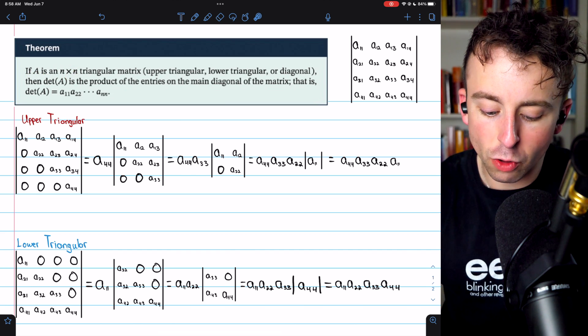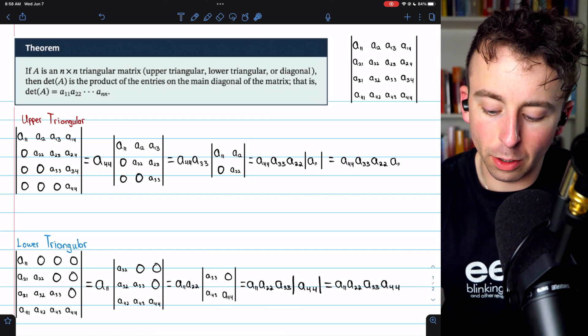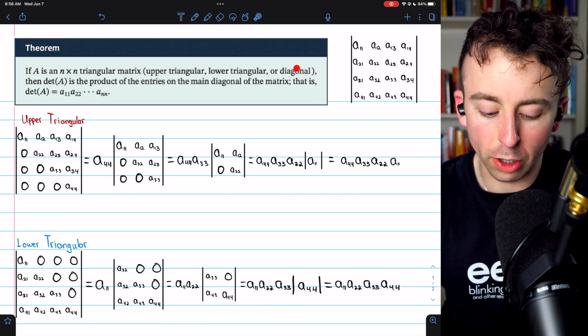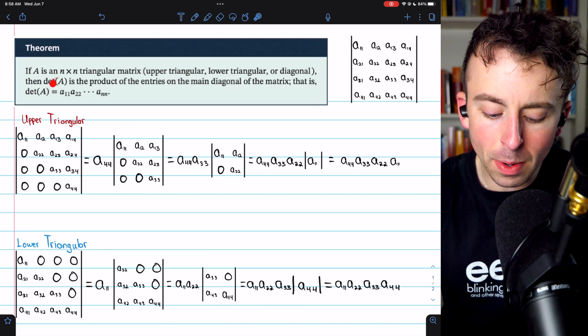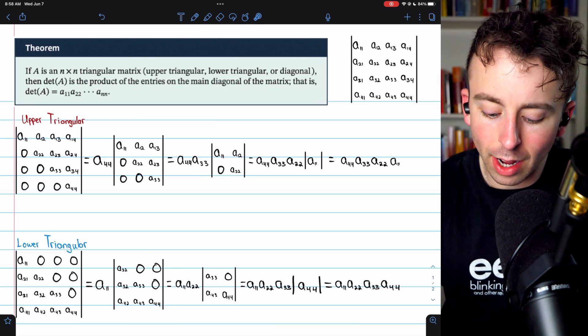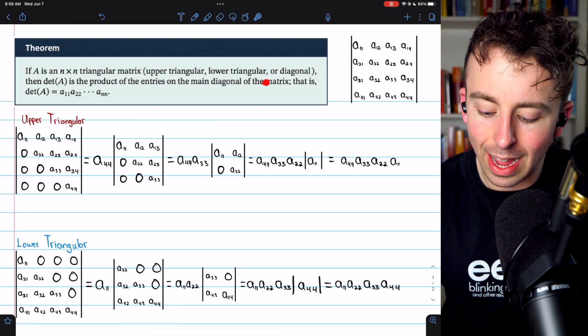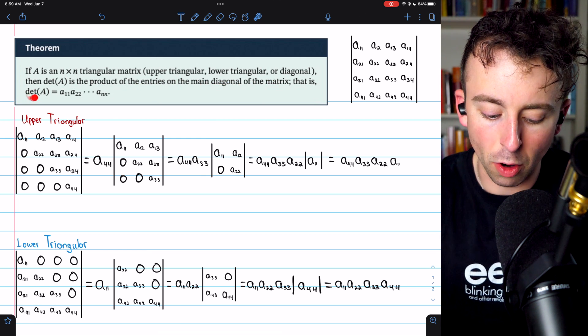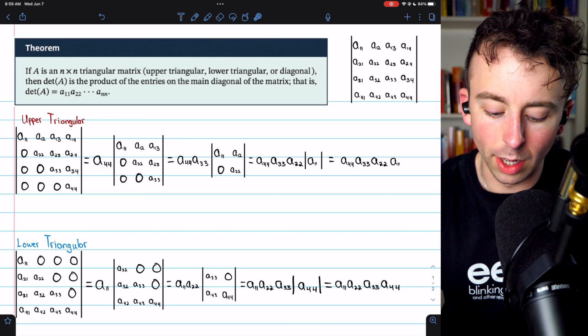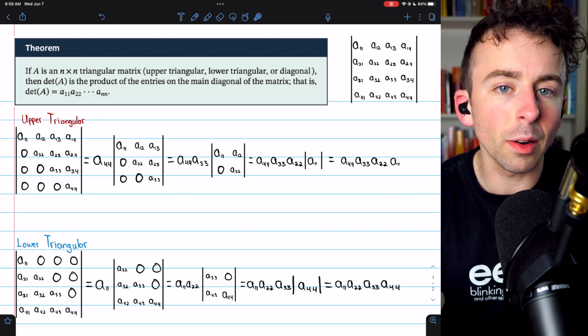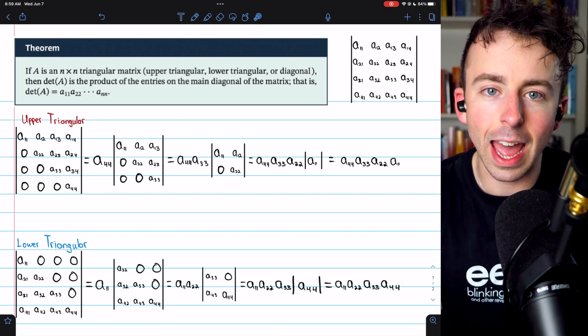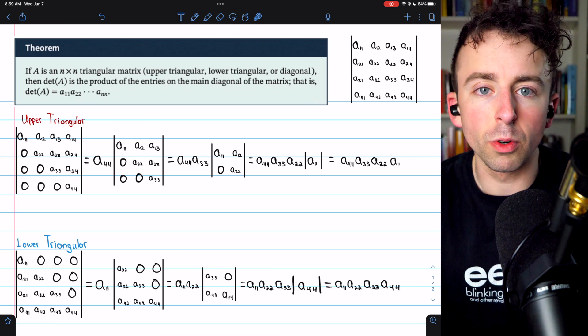If A is an n-by-n triangular matrix, upper triangular or lower triangular, or it could be diagonal, then the determinant of A is the product of the entries on the main diagonal of the matrix. So the determinant of A is just A11 times A22, etc., all the way up to Ann.